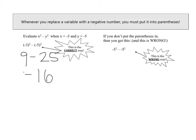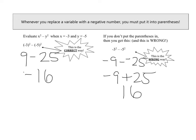Now if you had written the problem without parentheses, you would get negative 9 — because you'd do 3 squared and tack on the negative — minus negative 25, because you'd do 5 squared and tack on the negative. That becomes negative 9 plus 25, which is positive 16. Two totally different answers — completely opposite ends of the number line. This is totally wrong. This is one of the number one misconceptions in algebra all over the world.